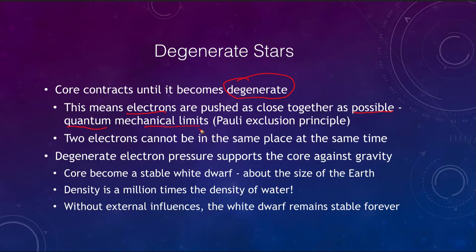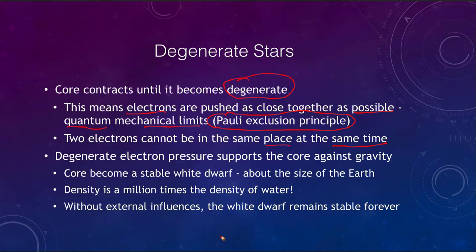What happens is that the core contracts until it becomes degenerate. This means that the electrons in the atoms are pushed as close together as is possible — we are getting down to quantum mechanical limits. Two electrons simply cannot be in the same place at the same time. This is known as the Pauli exclusion principle, which says that two electrons can't be in the same place at the same time, so you can only get them so close together. In normal matter, even though it seems solid, there is a lot of empty space.